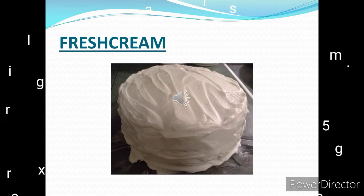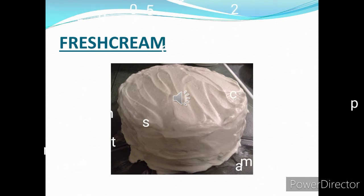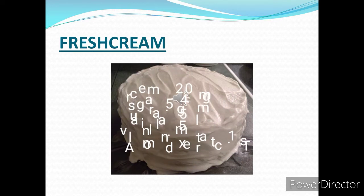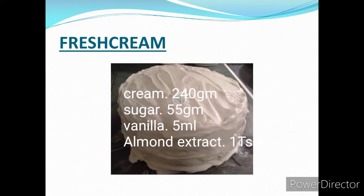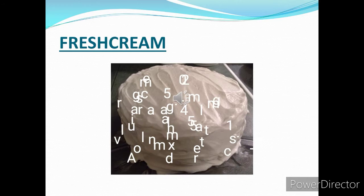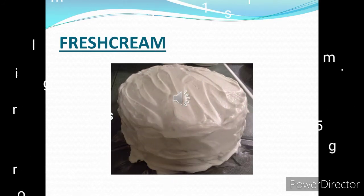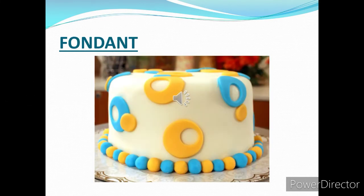Outside the refrigerator at room temperature, buttercream may melt, so extra precaution must be taken. Fresh cream icing is made from heavy cream, also called double cream. Sugar and cream along with almond extract are creamed together until the texture becomes light and fluffy, incorporating more air inside the cream. The cream is whipped till it can hold a stiff peak, after which it is stored in the refrigerator.